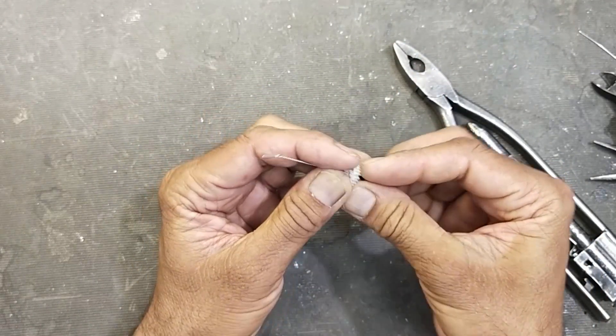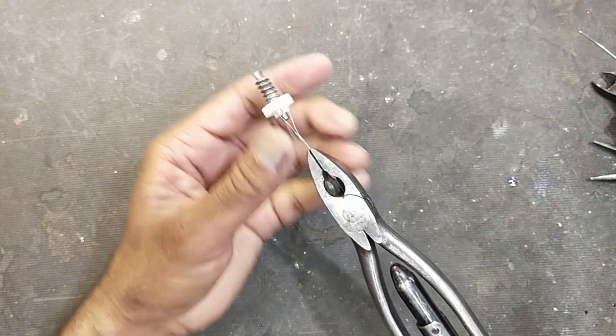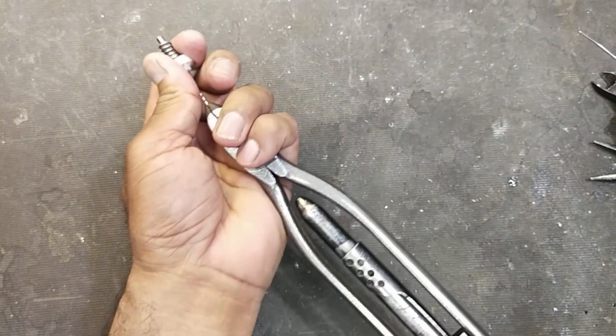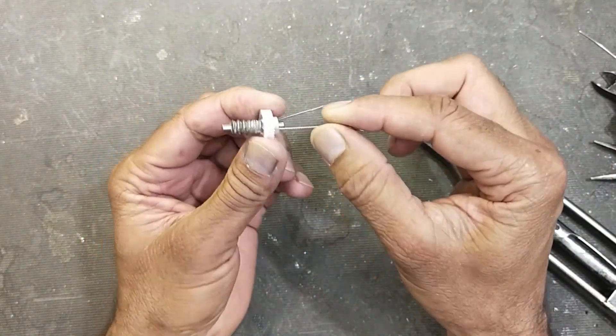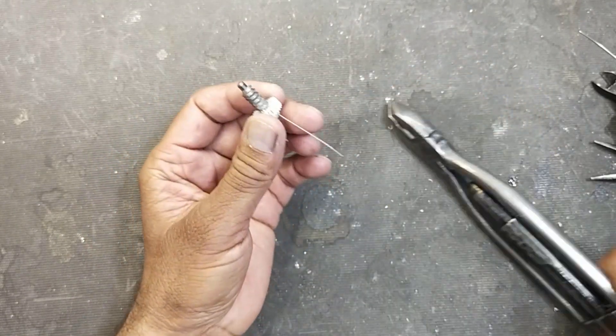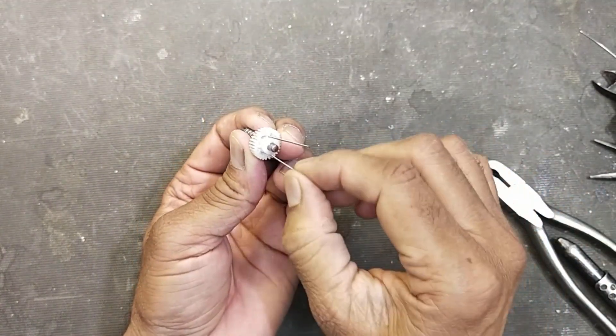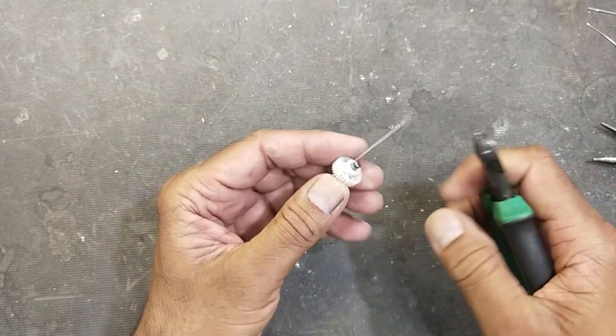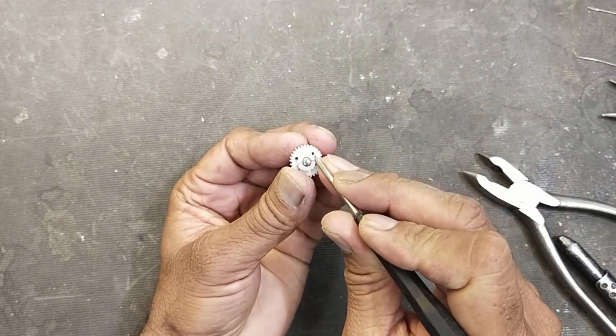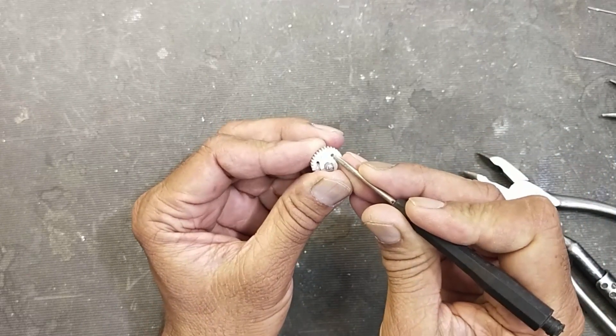Now I am installing new wire here in the second side and I will use the wire twister. Yes, we need to tighten this more. Yes, that's good. I will cut it. Now I will bend the ends of this wire here on both sides.